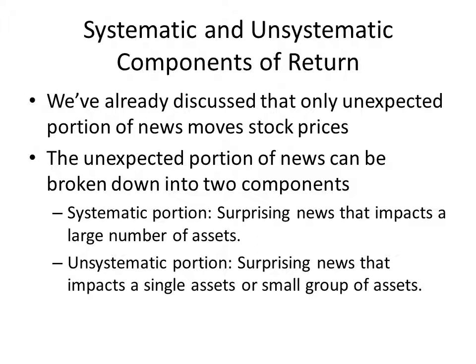We can combine these two ideas and break unexpected news down into two components: a systematic portion — surprising news that impacts a large number of assets — and an unsystematic portion — surprising news that impacts a single asset or small group of assets. For instance, a higher unemployment report from the U.S. government than the market expected would be a systematic portion of surprising news. However, if a CEO of a small firm was indicted on embezzlement charges, that would be an unsystematic portion of surprising news.